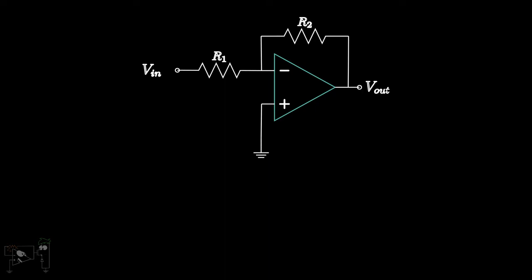Suppose we give an input VN to the inverting terminal side. Our objective is to find a relation between Vout and Vn. Let the voltage at the inverting input of the op-amp be Vx. Say a current I1 flows from the input source through the resistor R1 towards Vx, and a current I2 flows from Vx through the resistor R2 towards the output node Vout.